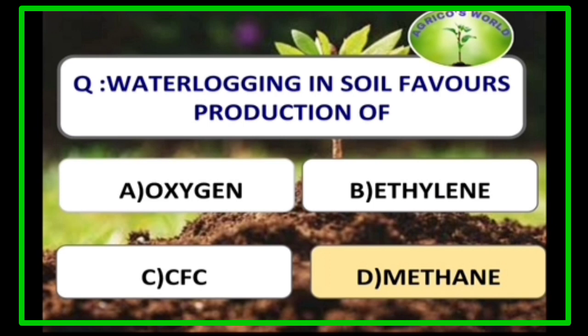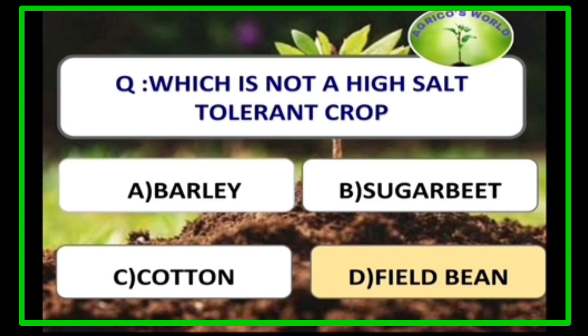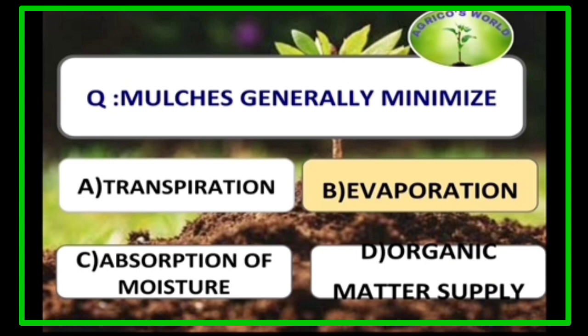Waterlogging in soil favours the production of methane gas. Pea bean is not a high salt tolerant crop. Barley, sugar beet, and cotton are all high salt tolerant crops, and this can be remembered by the code BSC.